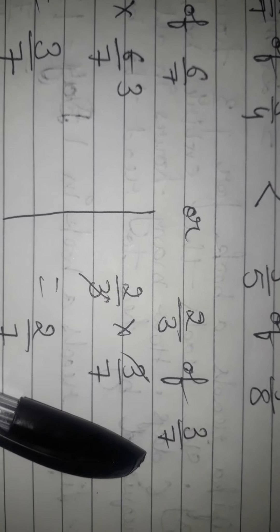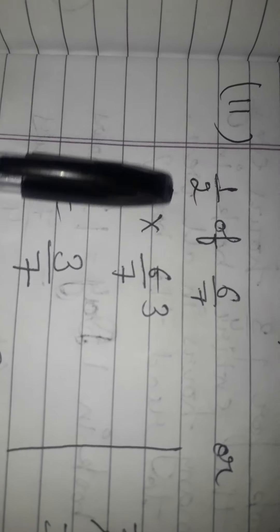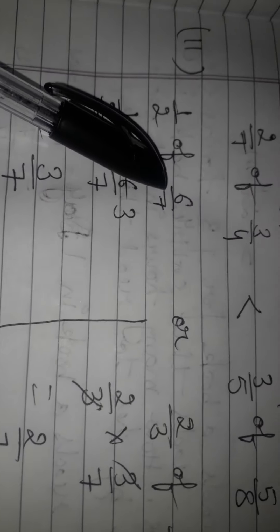The second part: is 1/2 of 6/7 greater, or 2/3 of 3/7? I will solve the LHS first. 1/2 multiplied by 6/7 — cut 2 and 6; 3/7 is left. Now RHS: 2/3 of 3/7 means multiply. Cut 3 by 3; only 2/7 is left. Since 3/7 is greater than 2/7, the LHS is greater. The answer is: 1/2 of 6/7 is greater than 2/3 of 3/7.